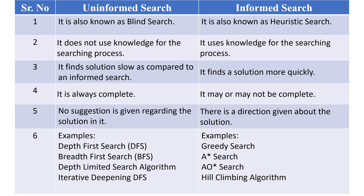Third difference: uninformed search finds the solution slowly compared to informed search, which finds the solution more quickly. Fourth difference: uninformed search is always complete, while informed search may or may not be complete. Fifth difference: no suggestion or domain knowledge is given in uninformed search. Examples of uninformed search: Depth First Search, Breadth First Search, Depth Limited Search, and Iterative Deepening Depth First Search. Examples of informed search: Greedy Search, A*, AO*, and Hill Climbing.